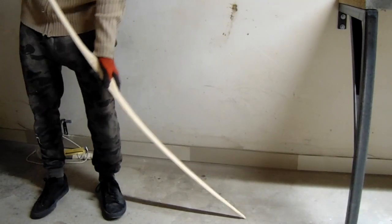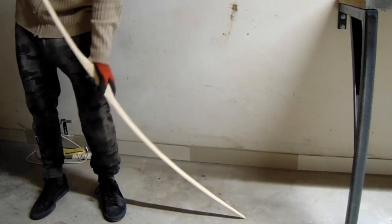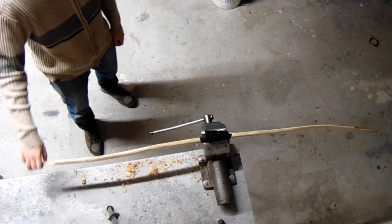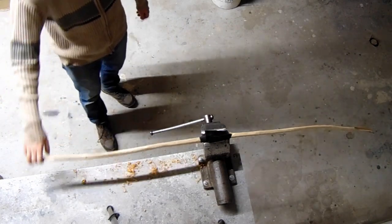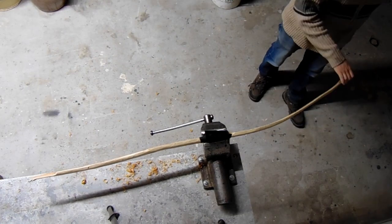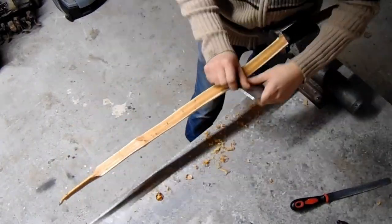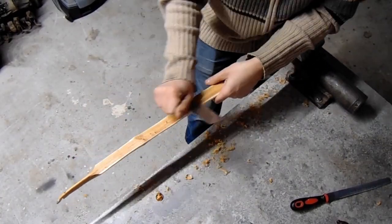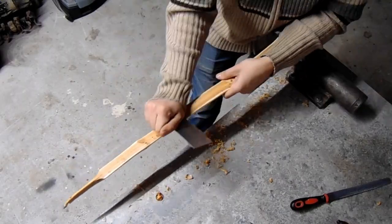Now we are pushing limbs into the work, holding the tips on the floor. I like to use my vise instead, clamp the bow at the handle and push the limbs into the work. Anyway, we are marking stiff spots, scraping them off and pushing it further and further. And we repeat it over and over again.